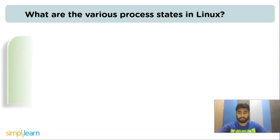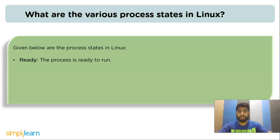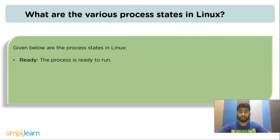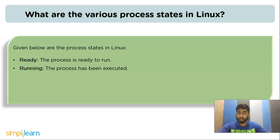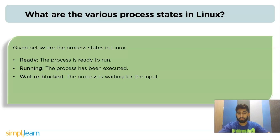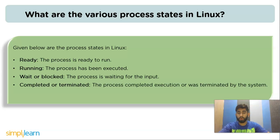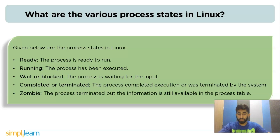The next question is: what are the various process states in Linux? The process states are: ready — the process is ready to run; running — the process has been executed; wait or block — the process is waiting for input; completed or terminated — the process has completed execution or was terminated by the system; and zombie — the process is terminated but its information is still available in the process table.